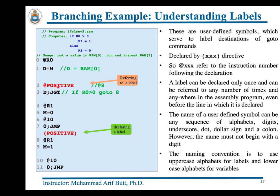Every assembly language specifies a way to declare a label. In Hack assembly, a label is declared by writing the label name enclosed in round parentheses. The assembler associates the instruction number following the label declaration with that label — so here address 8 is associated with POSITIVE. At instruction 2, '@POSITIVE' now refers to instruction address 8. A label can be declared only once but referred to any number of times, even before the line where it is declared.